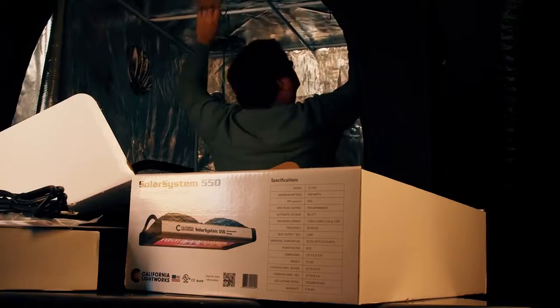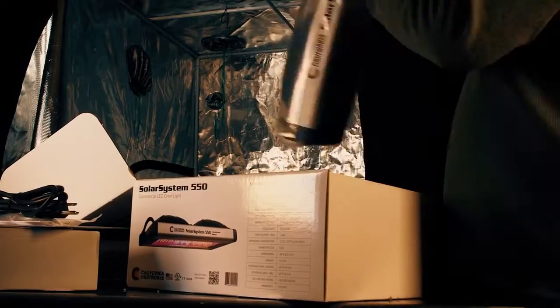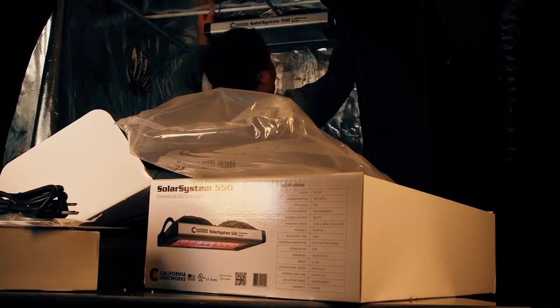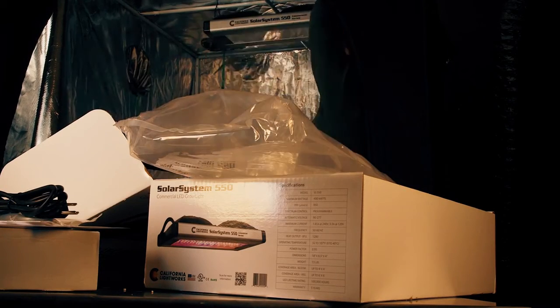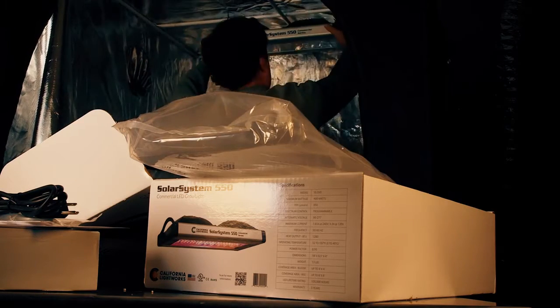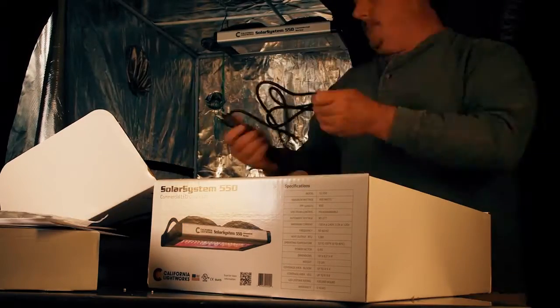Okay, now we're going to just hang the light up. I'm just putting it in this little temporary tent here, but it happens to be a four by four foot tent, which is the size of the area that this is rated to grow. It's rated for commercial grows at four by four foot on the bloom cycle, and then at six by six foot on the veg cycle.